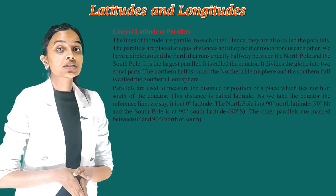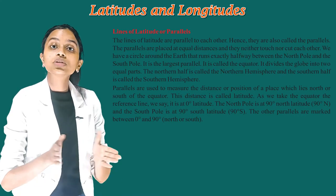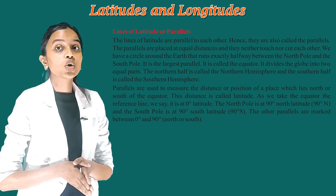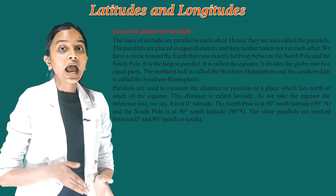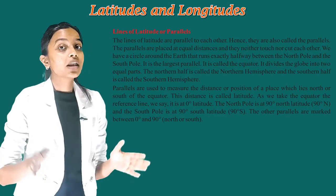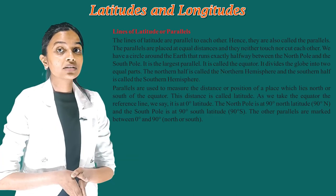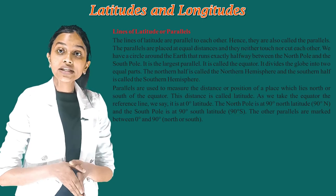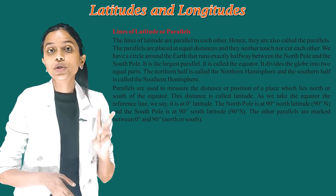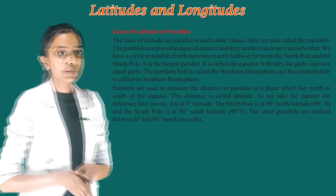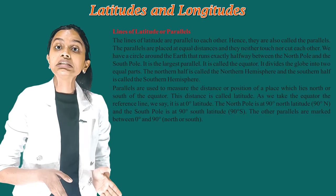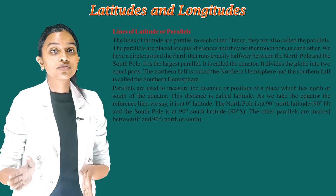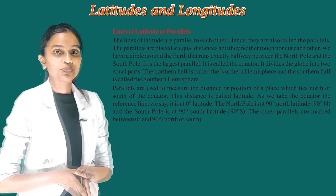We have a circle around the earth that runs exactly halfway between the north pole and the south pole. It is the largest parallel and it is called the equator. It divides the globe into two equal parts. The northern half is called the northern hemisphere and the southern half is called the southern hemisphere.